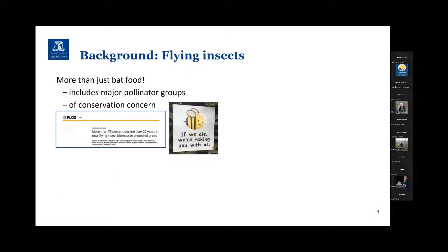Flying insects are more than just bat food, of course. They're a very important part of our ecology. They include major pollinator groups around the world, but they're of conservation concern. There's been quite a lot of data coming in in the last few years that many insect communities are in decline.